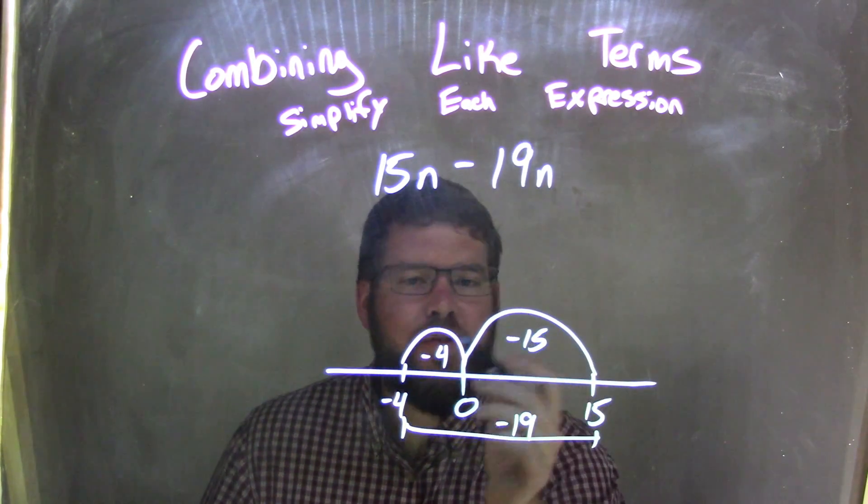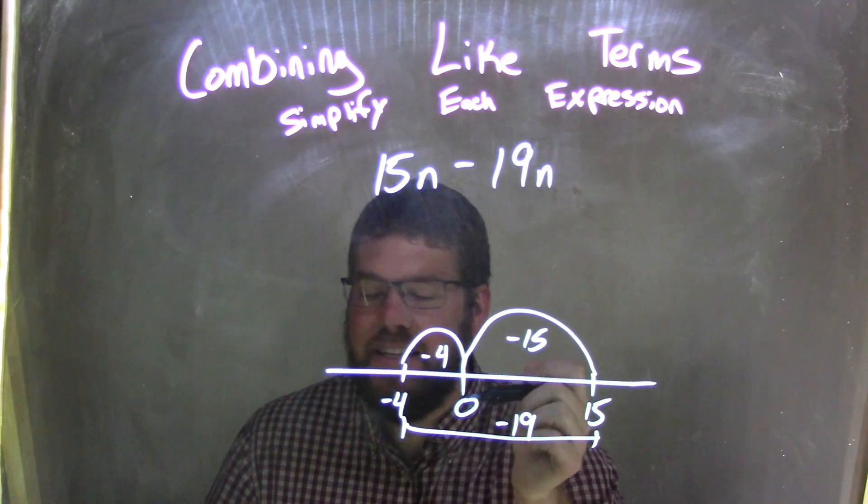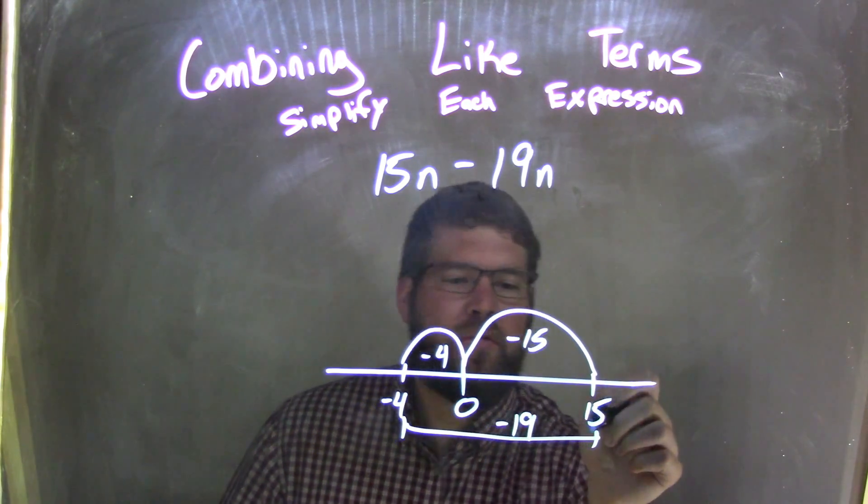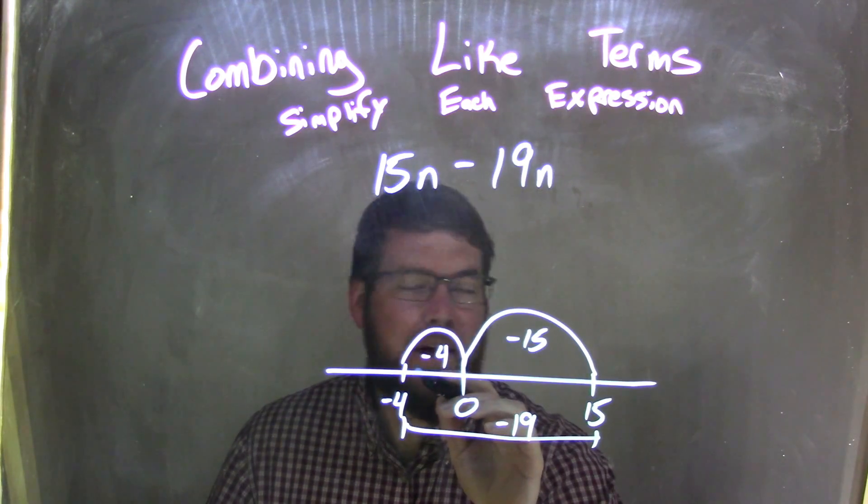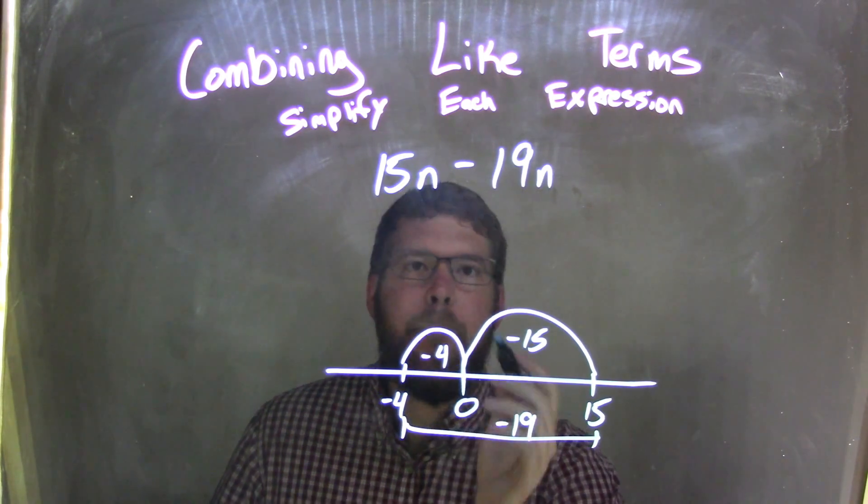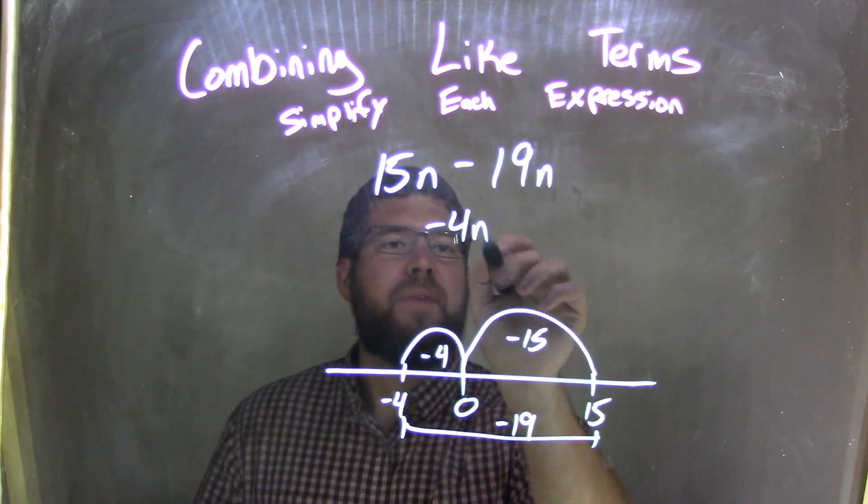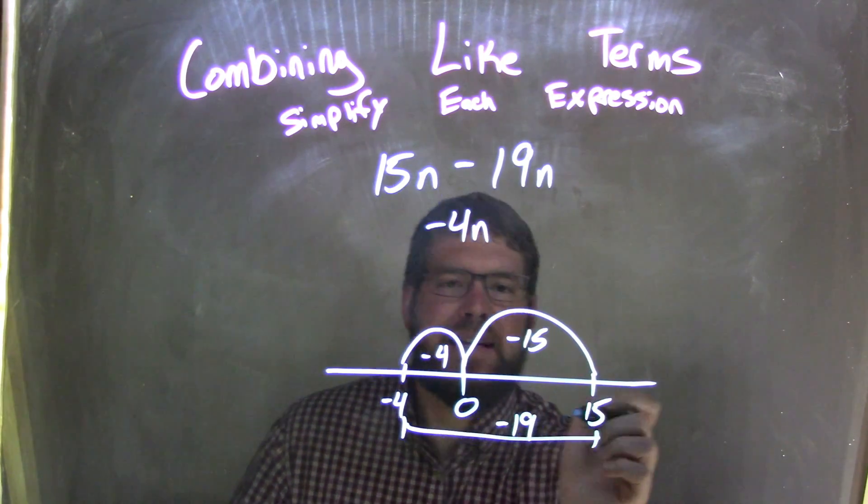So we know that negative 15 plus negative 4 is negative 19. That's an easy one to do. And so if I subtract all the way, 15 minus 15 units is 0, plus another 4 units, right? Subtracting another 4 units is negative 4. My final answer here is negative 4n, and we have a total subtraction of minus 19.